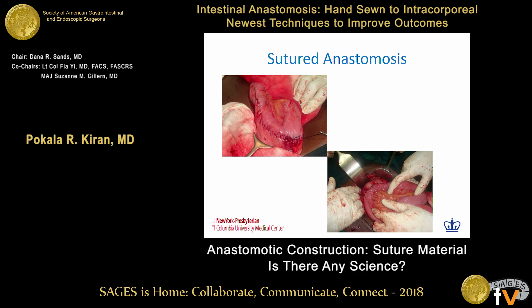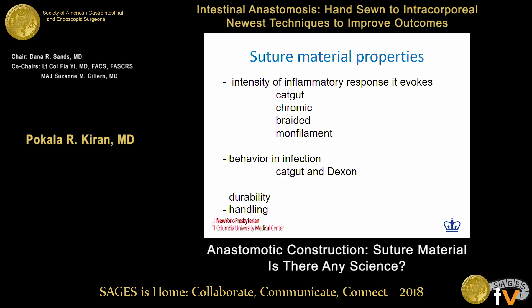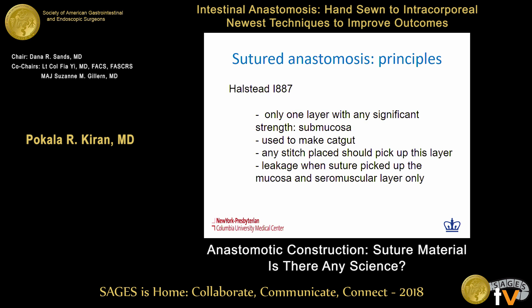We're all familiar with suture techniques — continuous or interrupted, side-to-side or end-to-end. When thinking about suture materials for bowel anastomosis, it is important to consider the intensity of the inflammation they evoke. Catgut provides a very intense inflammatory response, which counter-intuitively is not good for healing because it reduces tensile strength. Monofilament sutures are probably best because they're inert and do not cause as much inflammation. Catgut and Dexon tend to degrade faster in the presence of infection.